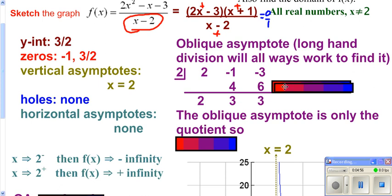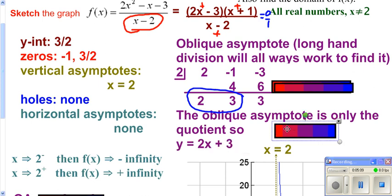Once again, we're only concerned about the quotient. This right here is your quotient. So that means that's your constant. That's the number in front of x. So we end up getting y equals 2x plus 3.